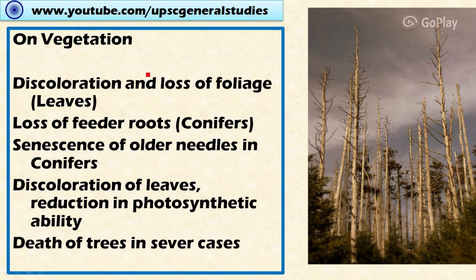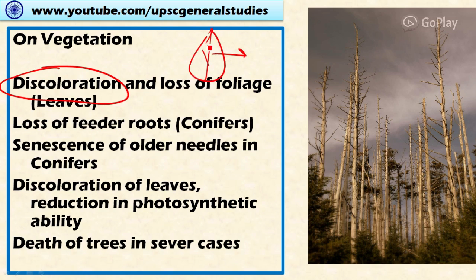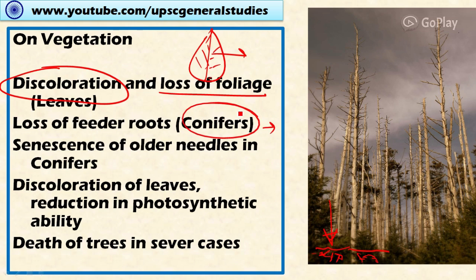Next, the impact of acid rain on vegetation. It leads to discoloration of leaves — that is, the changing of green leaves to other colors like yellow and red — because the photosynthetic pigments present in the leaves are destroyed. There is also loss of foliage. More importantly, acid rain results in the loss of feeder roots, which are the important roots that absorb nutrients and water in a faster and more efficient way than older roots, thereby reducing the productivity of trees and plants.